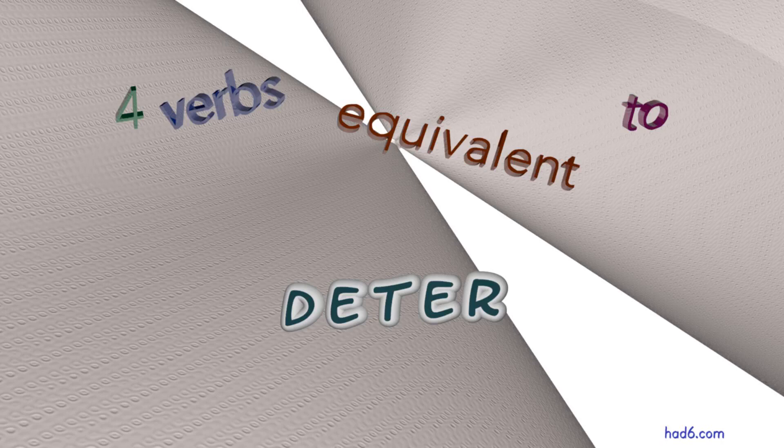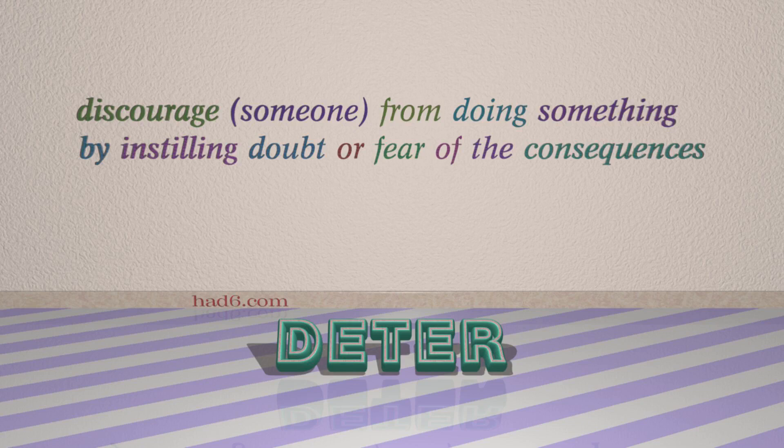Welcome to Had6 channel. In this video, we will look into DITA. Four verbs with similar meanings will be reviewed in example sentences. Let's get started. DITA, which means: discourage someone from doing something by instilling doubt or fear of the consequences.